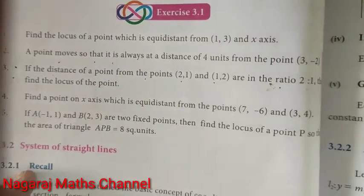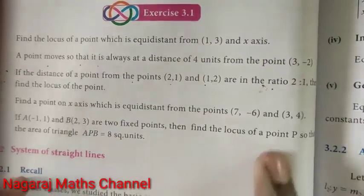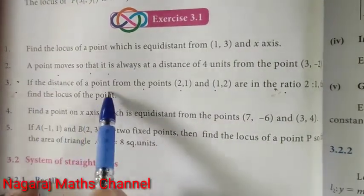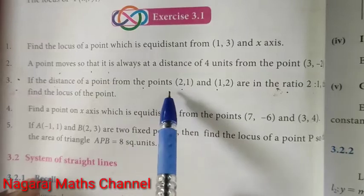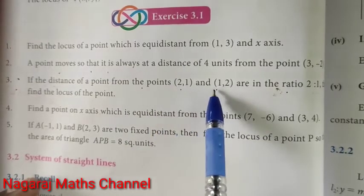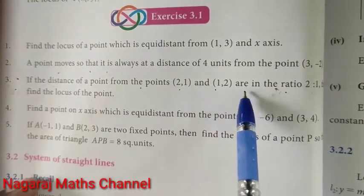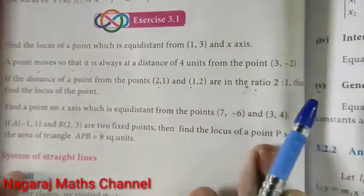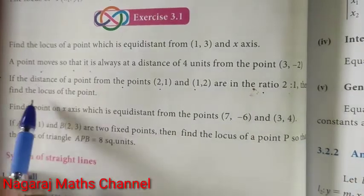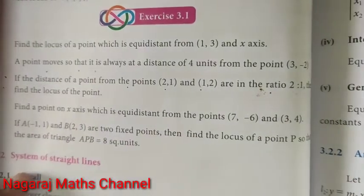Hi students, question number 3. If the distance of a point from the points (2,1) and (1,2) are in the ratio 2:1, then find the locus of the point.